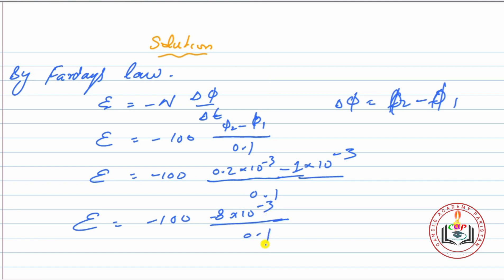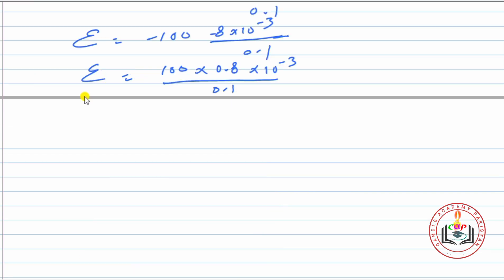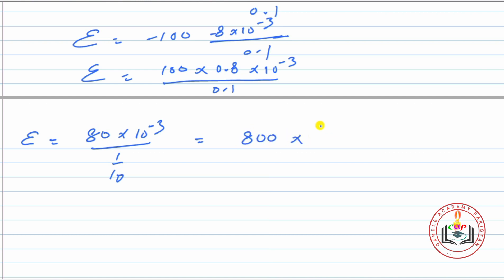Values put کریں: EMF = −N × (Φ2 − Φ1) / Δt۔ Change in flux = −8 × 10⁻³ upon 0.1، minus minus plus ہو جائے گا۔ تو EMF = 100 × 0.8 × 10⁻³ / 0.1 = 100 × 8 = 800 × 10⁻³ = 0.8 volts۔